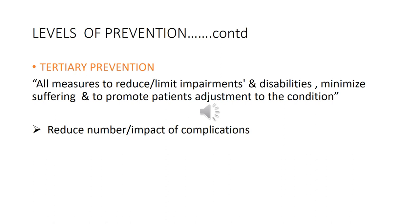The fourth level of prevention is tertiary prevention. When the disease process has advanced beyond its early stage, it is still possible to prevent the complications produced by the disease by applying tertiary prevention. Tertiary prevention is defined as all measures available to reduce or limit impairments, disabilities, or defects; to minimize suffering caused by existing departure from good health; and to promote the patient's adjustment to irremediable conditions. With tertiary prevention, you can reduce the number and impact of complications.